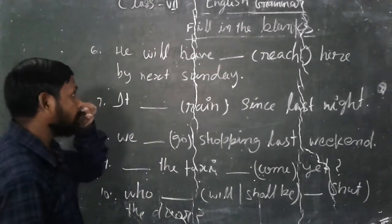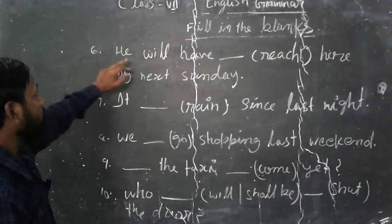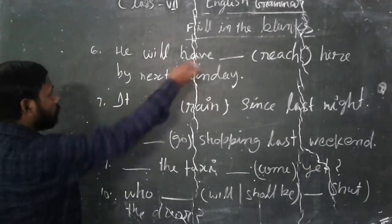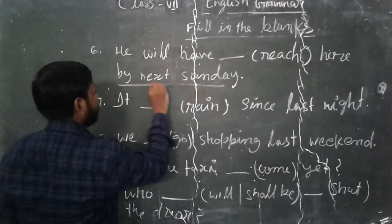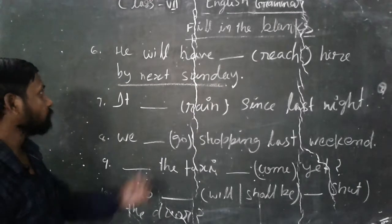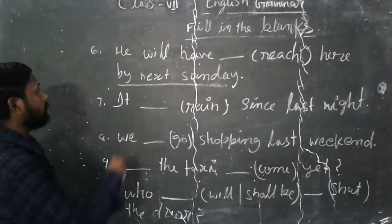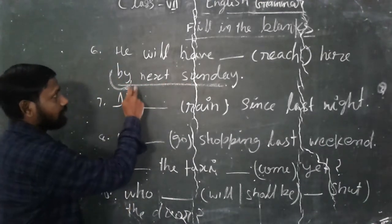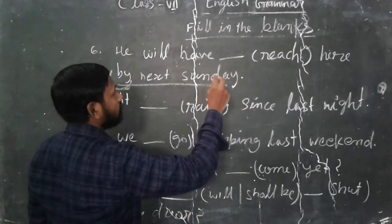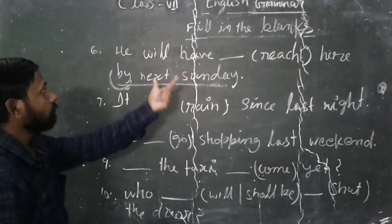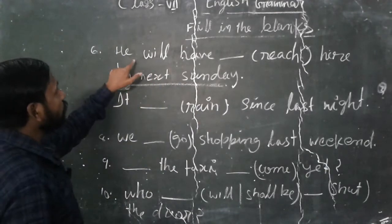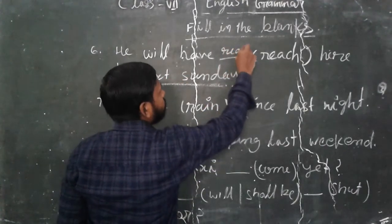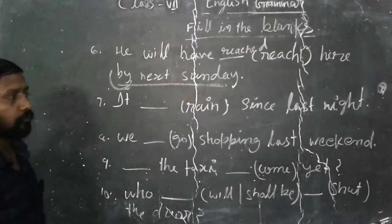Sixth number, he will have reach there by next Sunday. So by next Sunday, it's also time expressing. By next Sunday means when you will say and then you will watch any air like that by and with the time. So you can understand that is a future perfect tense. Future perfect tense means who will have reached third form.